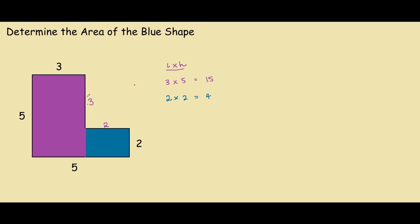Now that we know the area of the two rectangles, we can simply add them together. 15 plus 4 is 19, and this is unit squared.